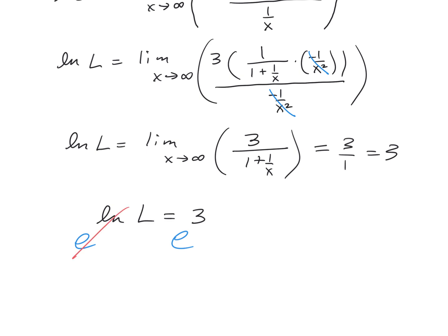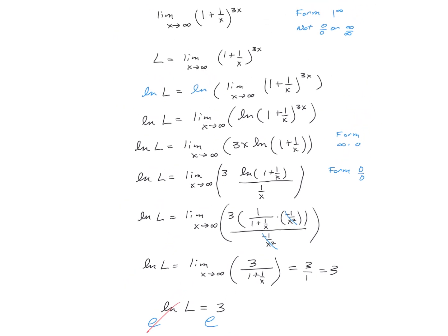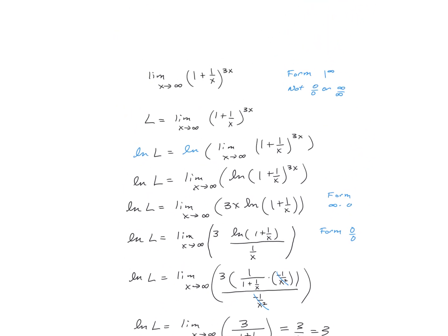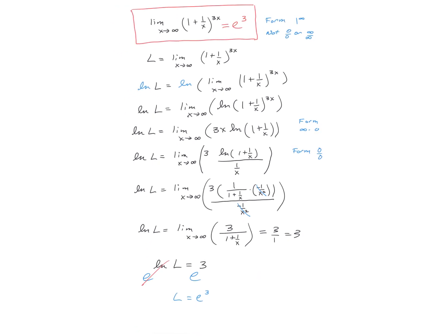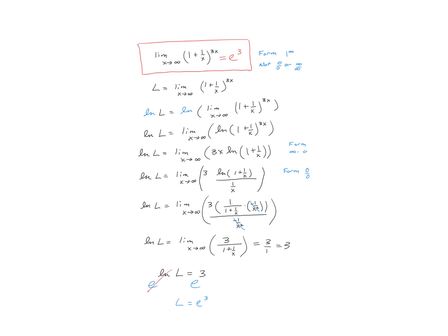Therefore, that original limit going all the way back to the beginning of the problem is equal to e to the 3rd power, and that is the value of our limit. We should not be surprised by this, because if you ignore the 3 and look at the limit as x goes to infinity of 1 plus 1 over x to the x power, that's the definition of e. We're just taking the definition of e and raising it to the 3rd power, so it equals e³. L'Hôpital's rule gives us the same result as the pre-calculus definition of e, and we can now find e to any power using this limit process.